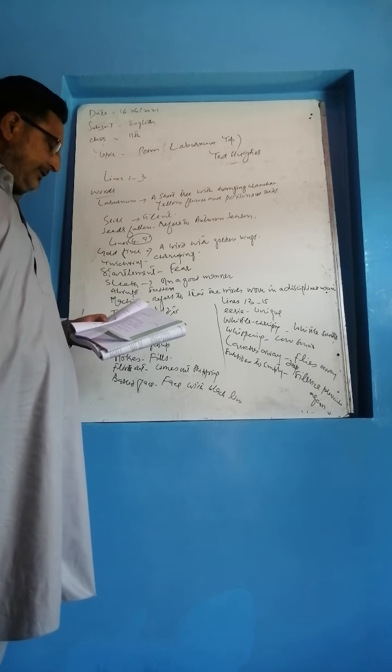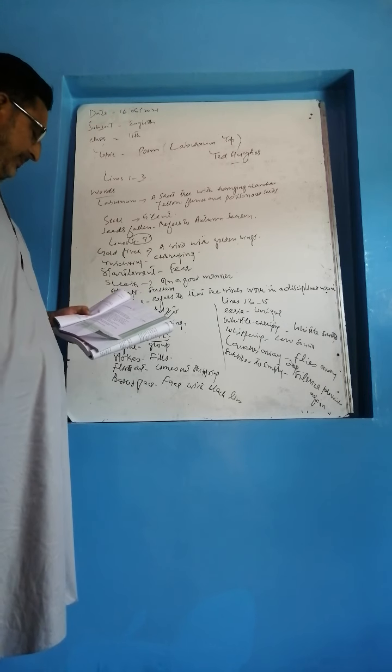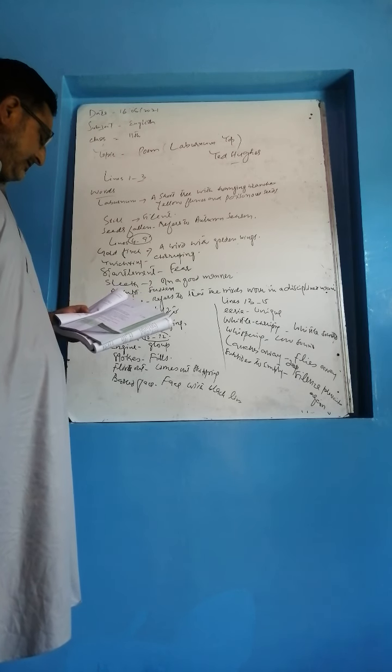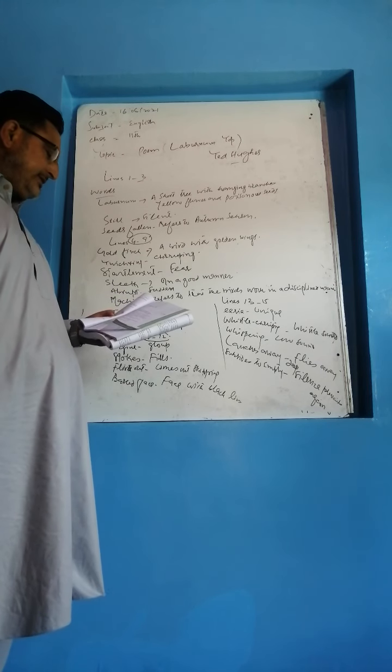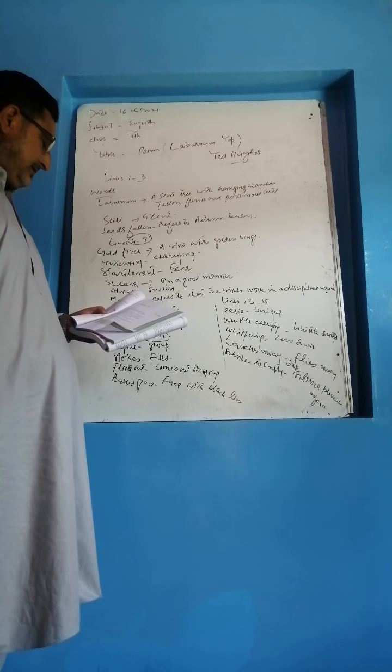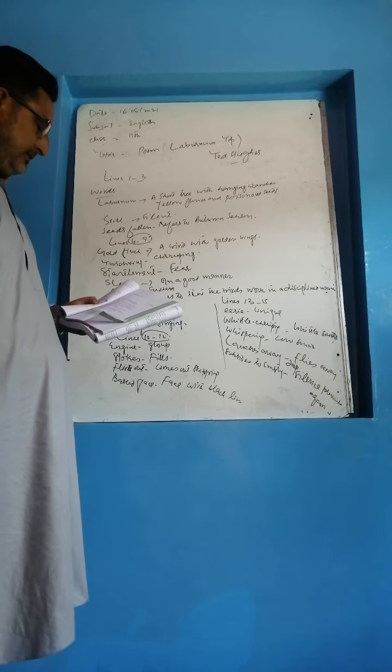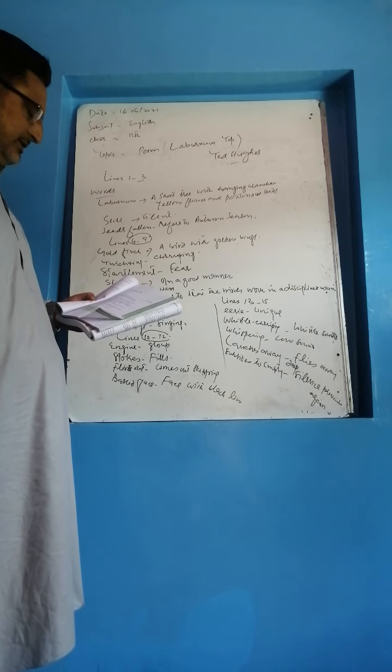The Laburnum Top. The Laburnum Top is silent, quite still in the afternoon yellow September sunlight. A few leaves yellowing, all its seeds fall.